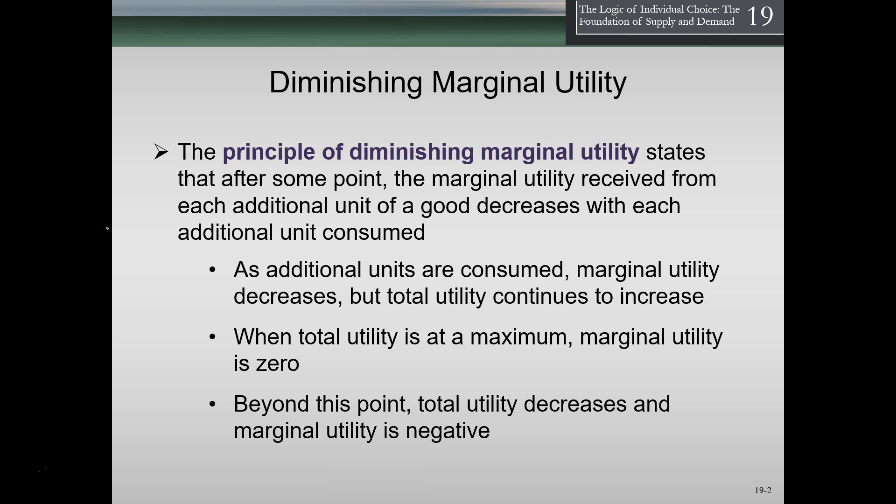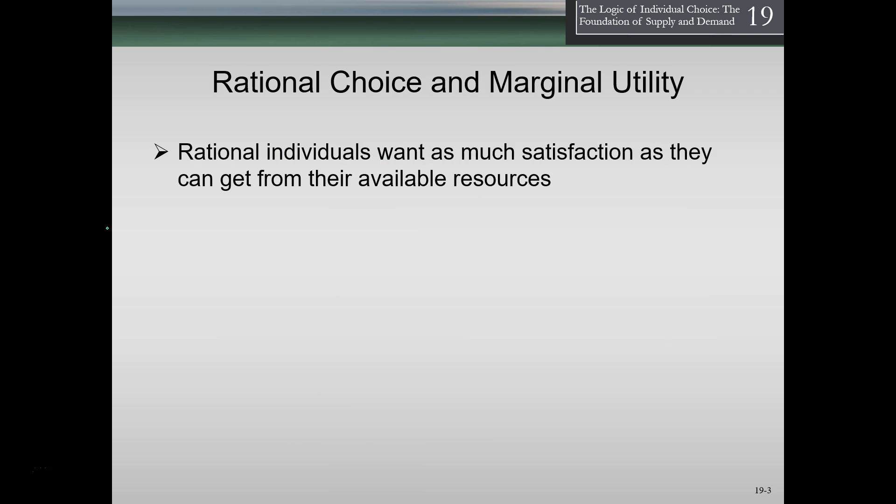On the margin, we are indifferent about the next piece of pizza — to have it or not. Beyond that point, total utility decreases and marginal utility is negative. If we forced that next piece of pizza down or bought it accidentally, that would actually decrease our utility and make us worse off, meaning the marginal utility — the amount of happiness we're getting on the margin — is actually going down.